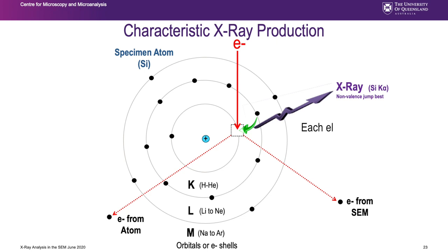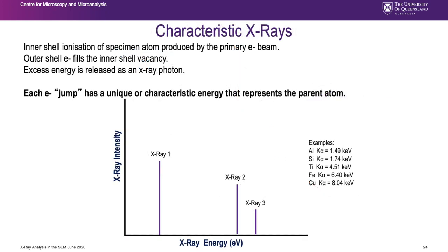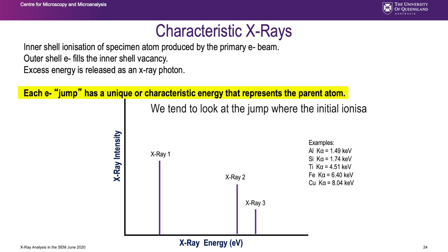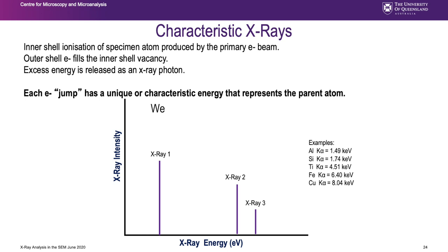This is quantum mechanics: each electron has a very well-defined energy, and the photon released is the exact difference between those two quantum mechanical states. In our characteristic X-ray spectrum we have very discrete peaks, and each peak corresponds to a particular jump within the atom. I normally look at the jump where the initial ionization happens in the K shell and the next shell up - the L shell - jumps to fill it. We call that a K-alpha X-ray.